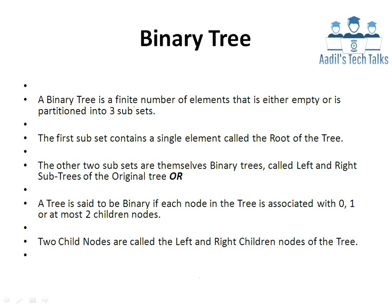A binary tree is a finite number of elements that is either empty or is partitioned into three subsets. The first subset contains a single element called the root, and the other two subsets are themselves binary trees. This means that at any level, no node can have more than two sub-nodes. These two sub-nodes are called the left and right children nodes of the tree.